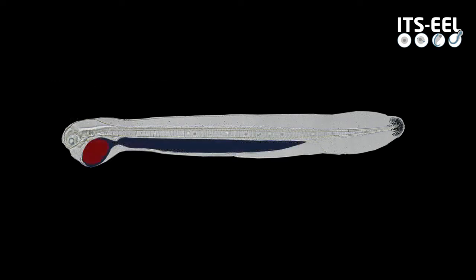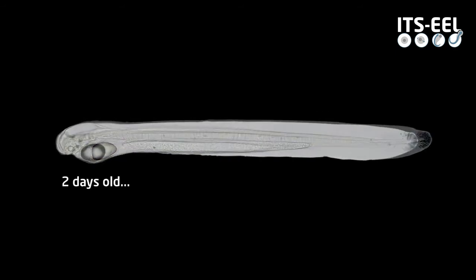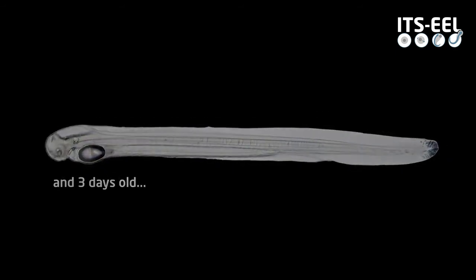The yolk sac, including the oil droplet, will be utilized by the larvae as it develops and extends the length from three to seven millimeters during the first two weeks of life.